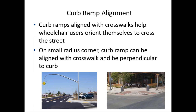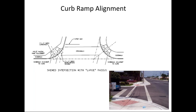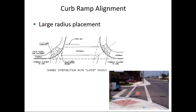Curb ramp alignment: ramps should ideally be aligned with the crosswalk to help wheelchair users orient themselves for crossing. On small radius corners this is fairly easy to achieve, and the ramp pairs here line up well with the corresponding crosswalk. On large radius corners, alignment is more difficult due to geometry — the ramp needs to be perpendicular to the curb, which may result in ramps not lining up ideally with the crosswalk.